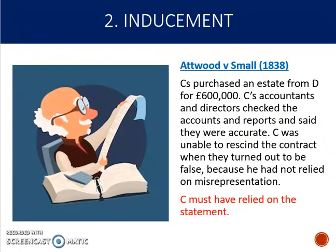Once a false statement of fact has been established, it's necessary for the representee to demonstrate that the false statement induced them to enter the contract. In Attwood v Small, the claimants purchased some land from the defendant for £600,000. The claimants' accountants and directors checked all of the accounts and reports and said they were accurate. That meant the claimant was unable to rescind the contract when they turned out to be false because they had not relied on the misrepresentation — they had checked for themselves and made their own assessment.